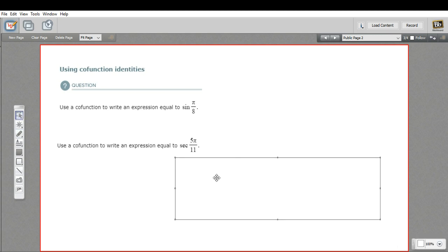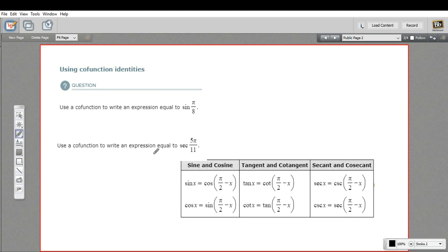So this chart may help a little bit. It's pretty simple, the process here. All we're going to do, if we've got the sine of something, we're going to take the cosine of that thing subtracted from pi over 2. Let's try that up here.